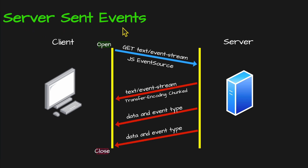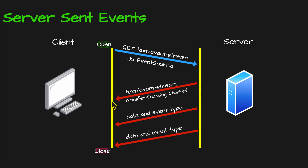Let's take a look at server-sent events. We open a connection from our client and we do a GET request with an accept type of text event stream. The server will then respond with text event stream with transfer encoding chunk, meaning we're going to be sending little bits of information back to the client. With server-sent events, communication is in one direction, from the server to the client. Once the connection is open, the client can then just wait for responses back from the server and handle the data in real time.